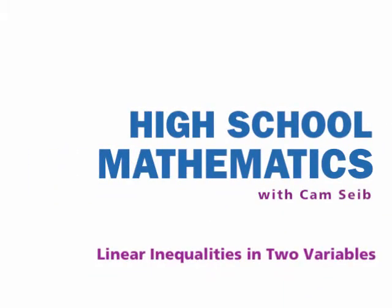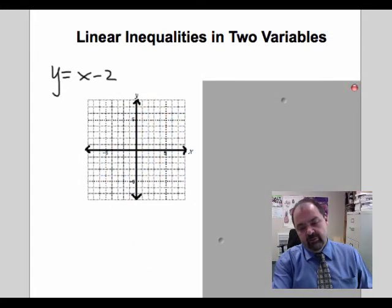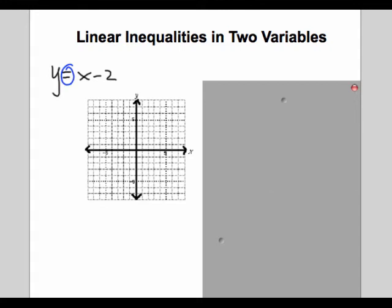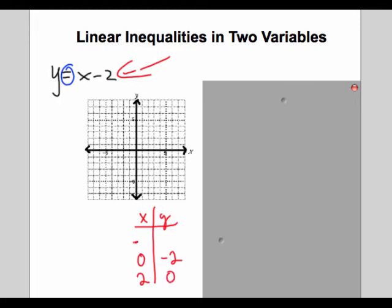In this unit we want to look at inequalities, specifically linear inequalities in two variables. We have graphed lines in two variables before, and when we graph a line we want to show all the points that make a given statement true. We begin by finding a couple of points — for example, if x is 2, y would be 0, and if x is negative 2, y would be negative 4. Since we want all points that make the equation true, we draw a solid line.